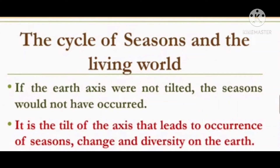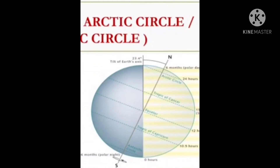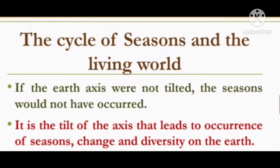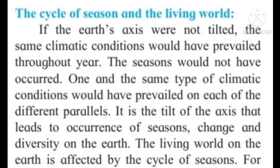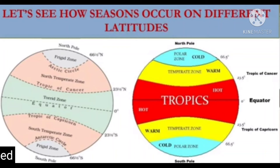The cycle of seasons and the living world: If the earth's axis were not tilted, the seasons would not have occurred. The same climatic conditions would have prevailed throughout the year, and one and the same type of climatic conditions would have prevailed on each of the different parallels. It is the tilt of the axis that leads to the occurrence of seasons, change, and diversity on the earth.